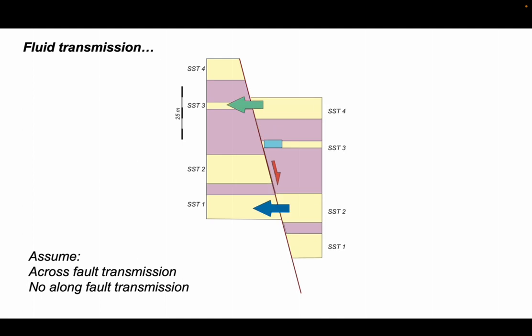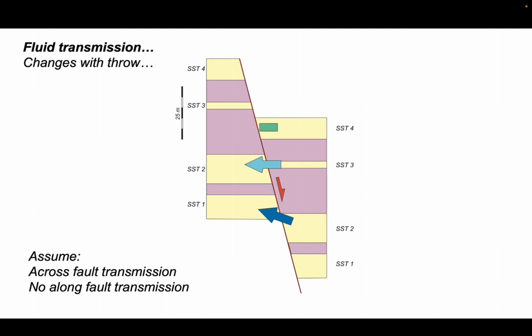In our offset state here, we can see that we've got sandstone four connected with sandstone three, sandstone two connected with sandstone one. So juxtaposition controls the communication of fluids from one formation to another. And it changes as you change the throw.